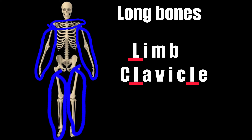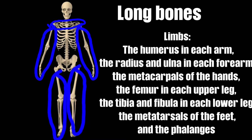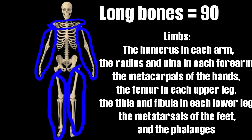Examples of long bones include the humerus of each arm, the radius and ulna of each forearm, the metacarpals of the hands, the femur in each upper leg, the tibia and fibula in each lower leg, the metatarsals in the feet, and the phalanges that make up the fingers and toes. And again, the clavicles — the two collar bones — are examples of long bones. An average adult has 90 long bones.